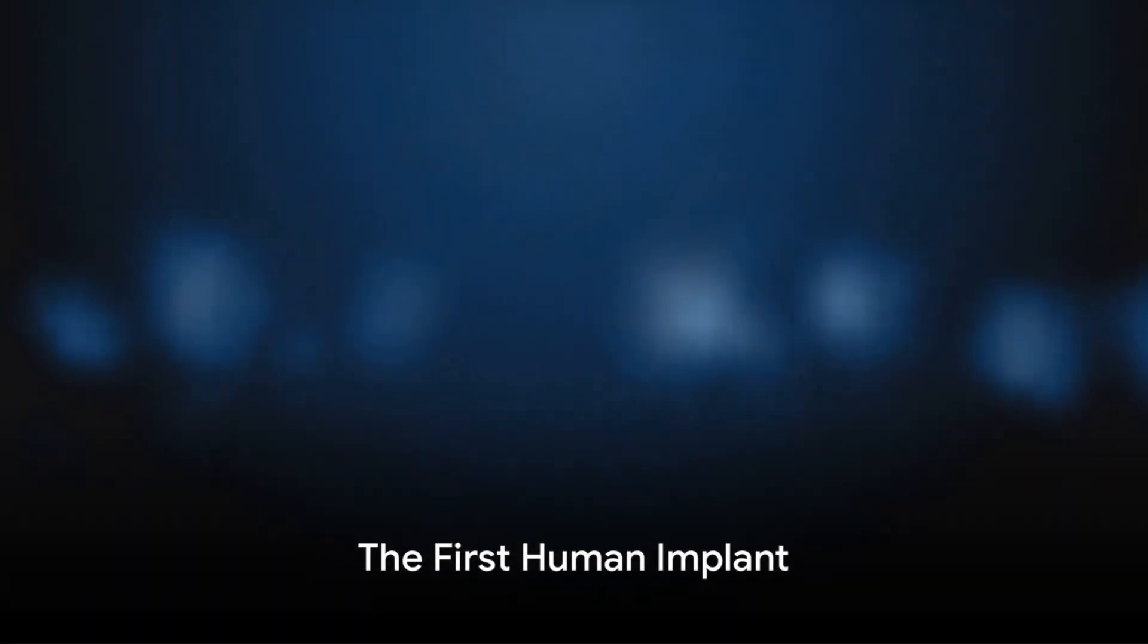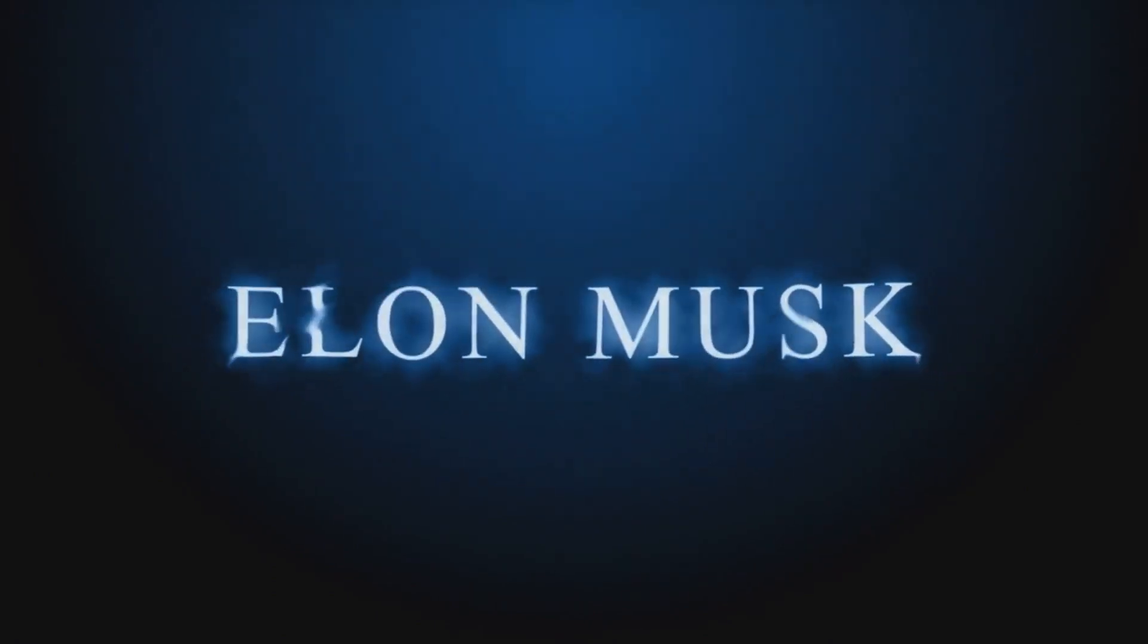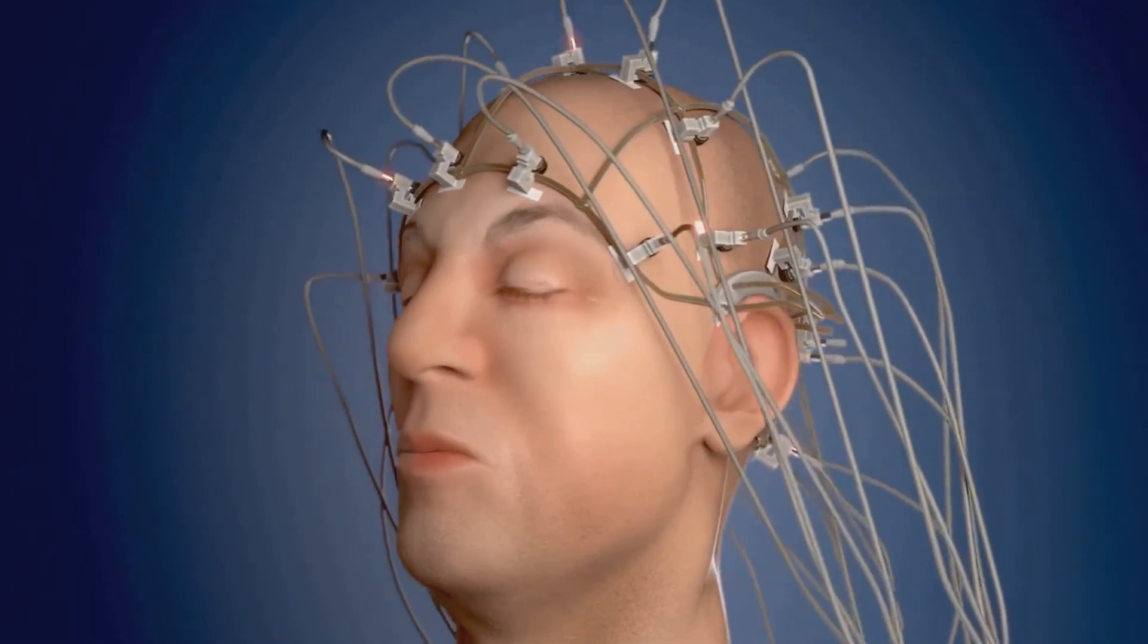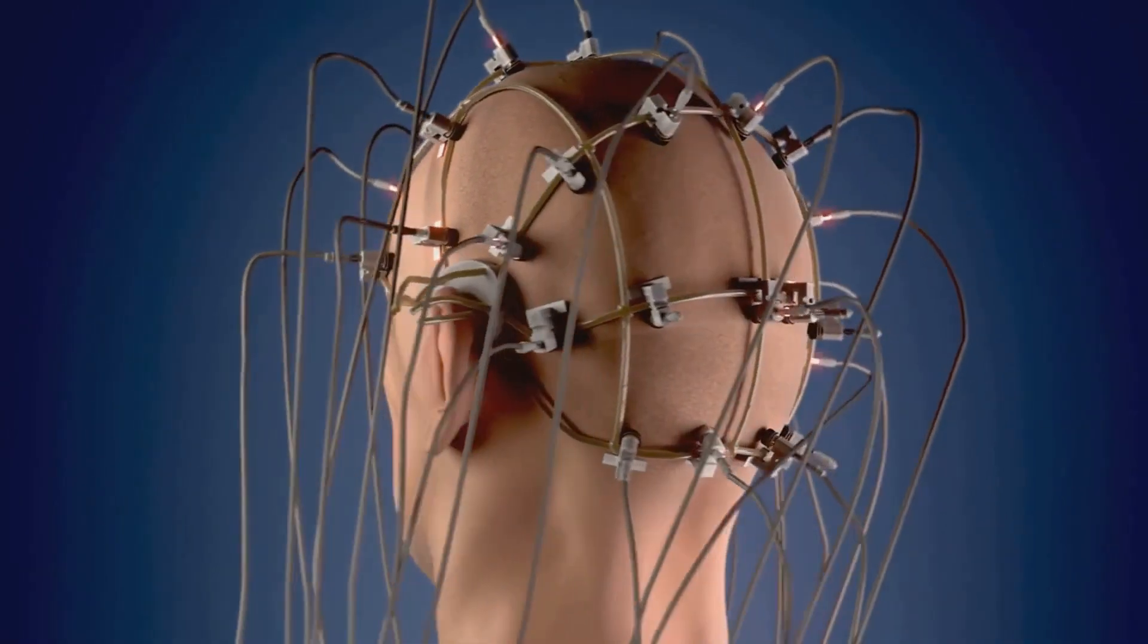Situated in the area of the brain responsible for planning movements, this revolutionary brain chip has been successfully implanted in a human subject. Neuralink's method is higher in bandwidth and more invasive than those of its rivals, with a minimum of 42 individuals globally having undergone brain computer implants.